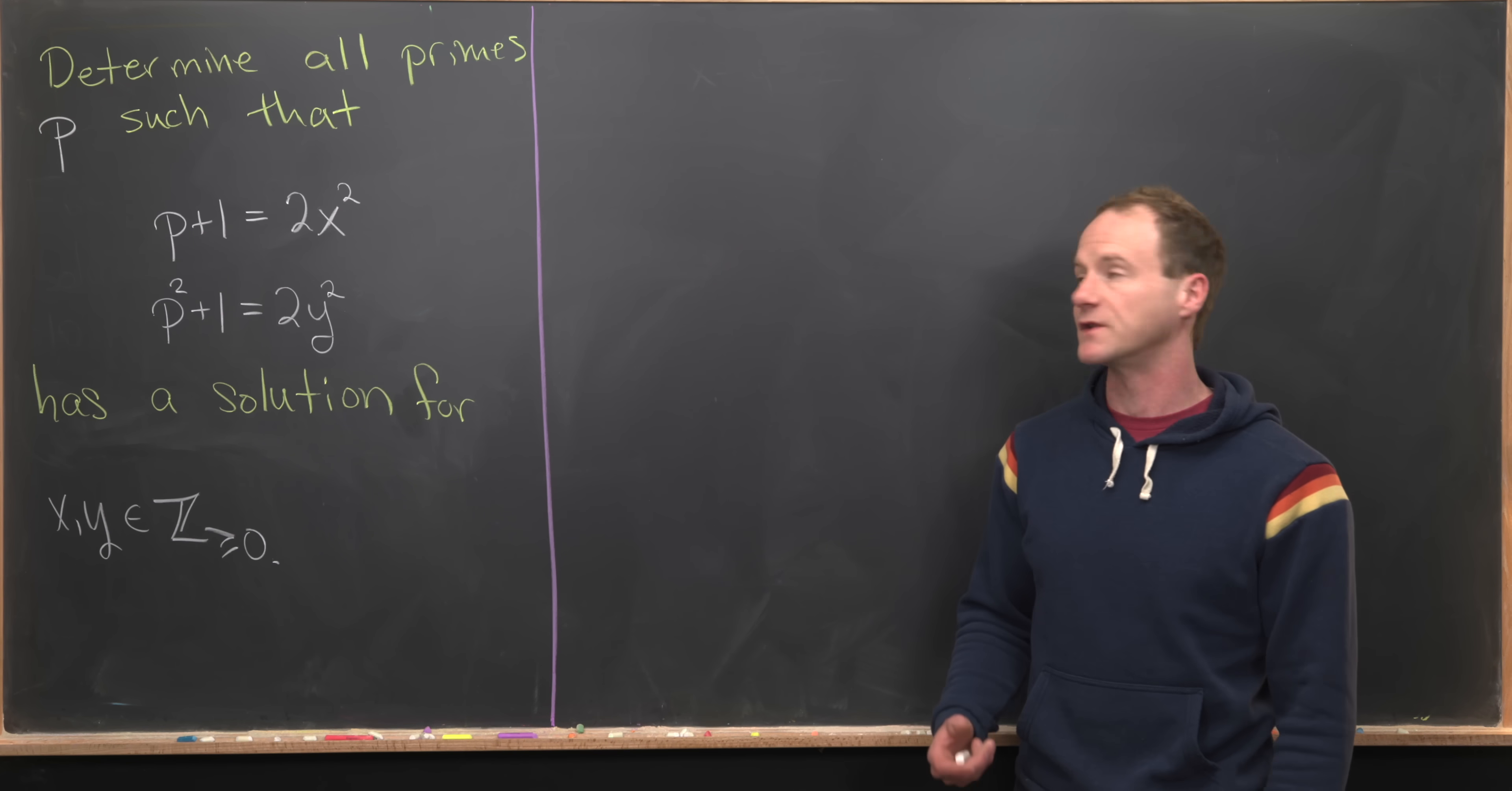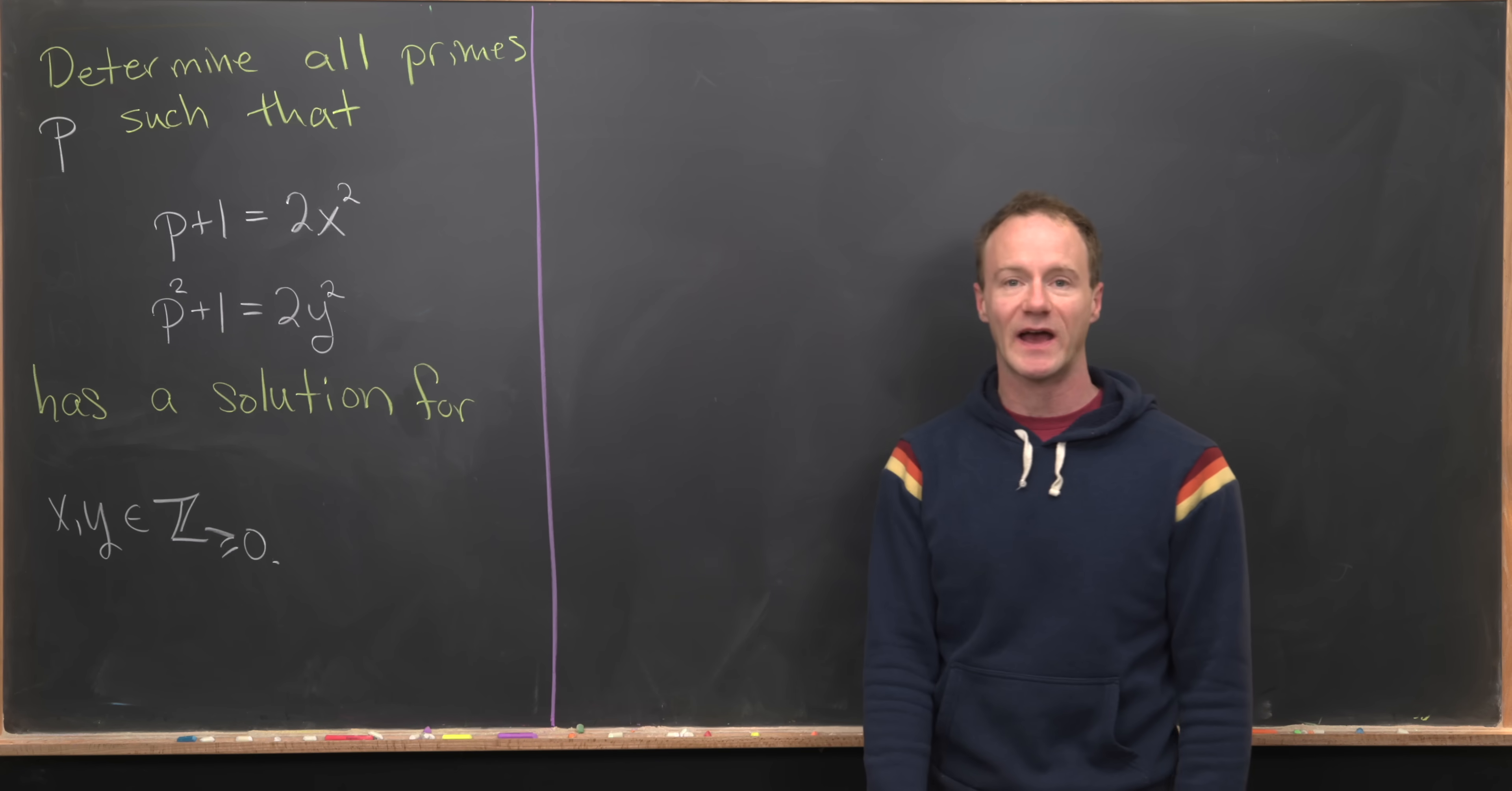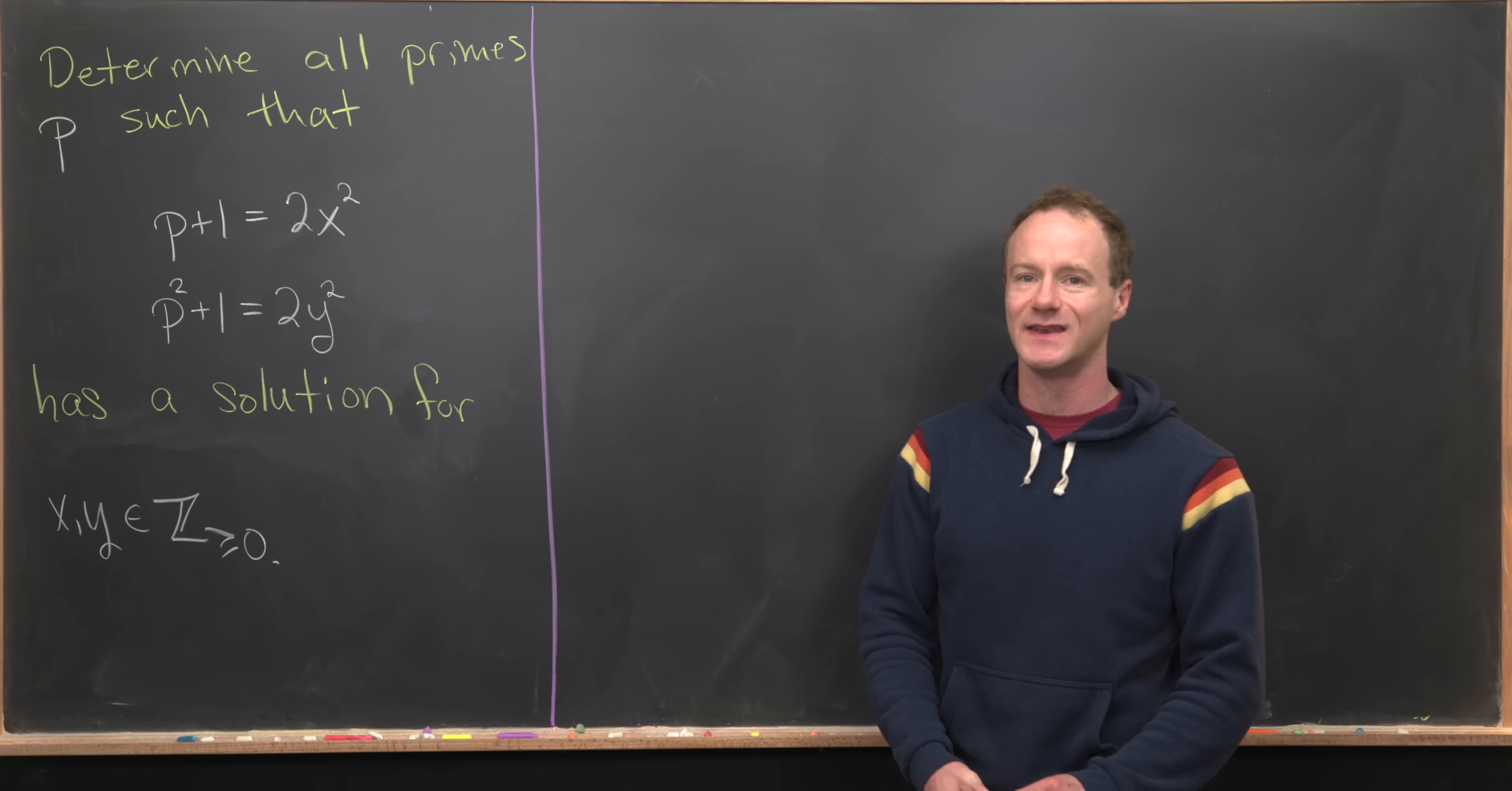I've got a nice problem involving prime numbers for you today. Our goal is to determine all primes p such that p+1 equals 2x² and p²+1 equals 2y² has a solution for some non-negative integers x and y.